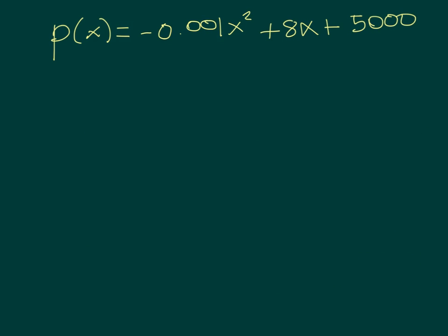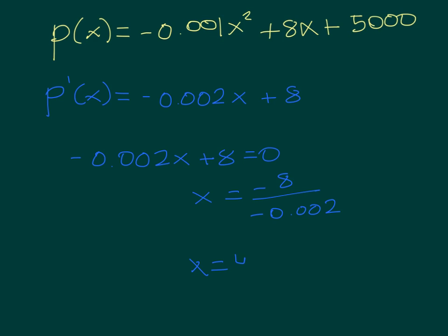Once we have our formula, the second step says obtain the derivative of the function. So, let's obtain the derivative of p of x, which is p prime of x. The derivative will be negative 0.002x plus 8. And then you have to equate the derivative to 0 and solve for x. So, we're going to equate the derivative to 0, and then we're going to solve for x. So, x will be equals to negative 8 over negative 0.002. So, that will be x equals to 4,000. And that is my maximum, the quantity that maximizes the profit.